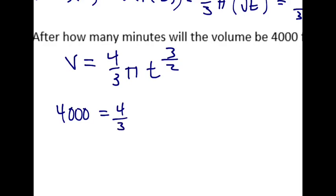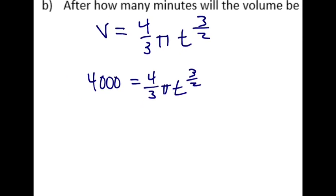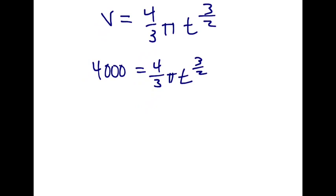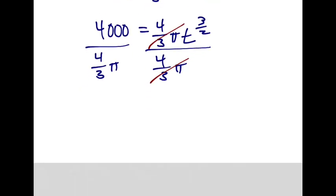So let's see if we can crash through this algebra. Well, we're going to divide both sides by 4 over 3 pi to get rid of that. So that cancels all that stuff. Someone want to give me a decimal approximation to that? Make sure this is in brackets, and this as well.